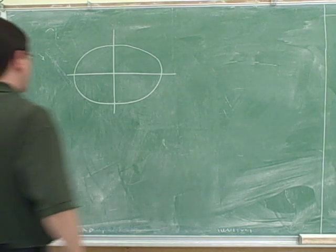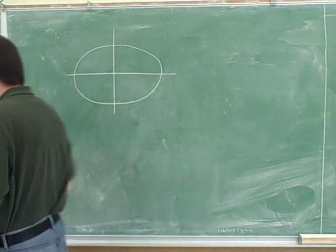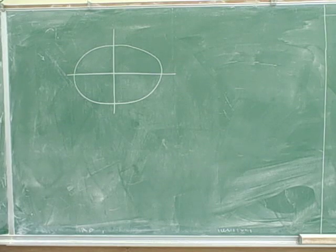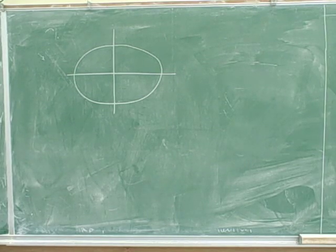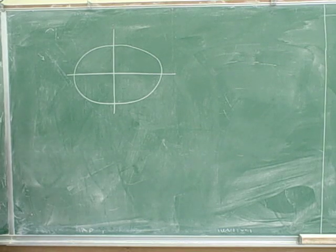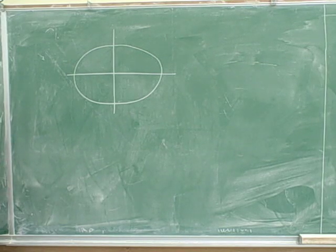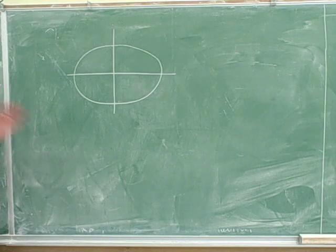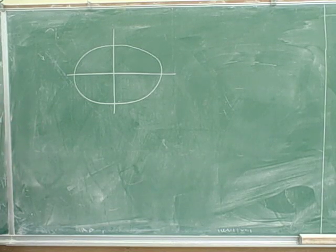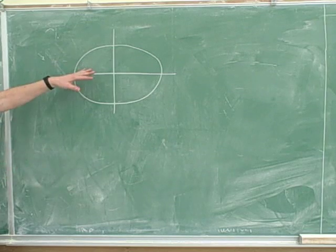If you remember back to high school, there are two different ways to think about trigonometry: the triangle way and the unit circle way. Both of those are useful for physics. Last time we talked a little bit about the triangle way, but in order to remember the key trig functions for particular angles, it helps to think about the unit circle.